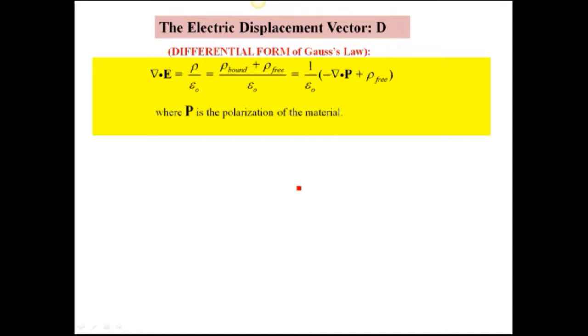If we take the differential form of Gauss's law, as you remember the divergence of E is equal to rho over epsilon, and in the past we've just used the free rho. But now we use the bound and the free charge densities, so we add those two together.